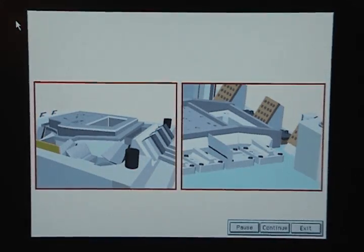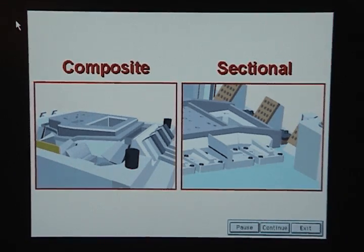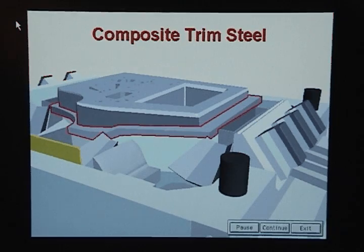Trim steels are constructed two ways. There are composite trim steels and sectional trim steels. Composite trim steels are constructed as an integral part of the die and have one continuous edge that forms the trim line.